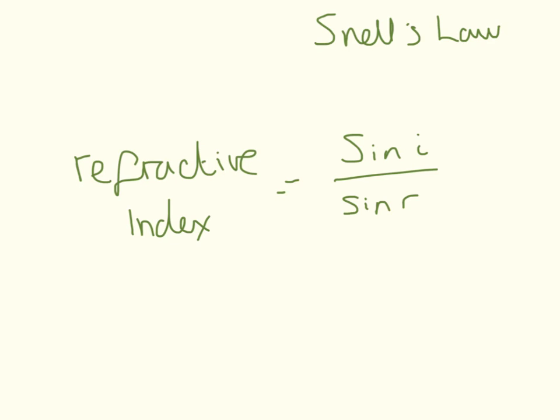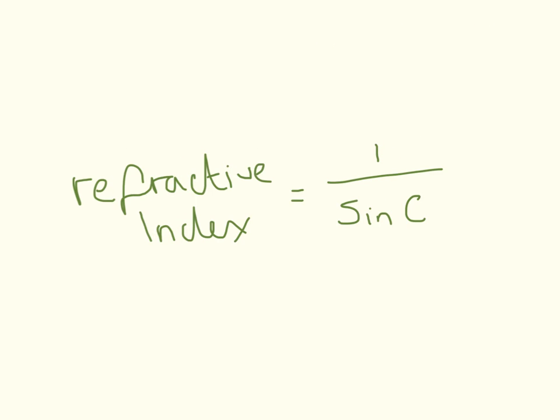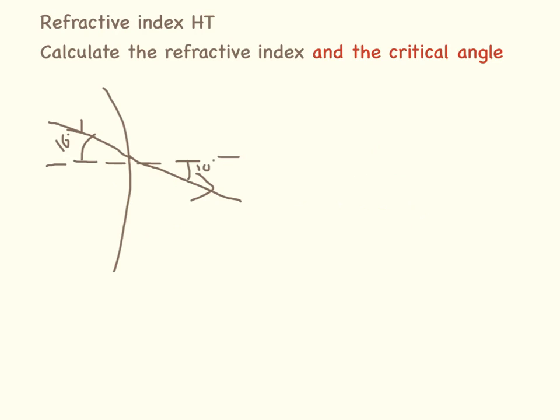So we're going to be looking at two equations today. Both of these equations are in the formula sheet for AQA but not for Edexcel. So the refractive index, which can also be written as N, is equal to sine of I over sine of R. And the refractive index is also equal to 1 over sine of C. In all the questions I'm going to be doing today, I'm going to be combining both of these equations just to make it that little bit harder. In the exam, they will probably only ask you to use one equation. When I'm writing these equations, I'm going to use N for refractive index and C for the critical angle.